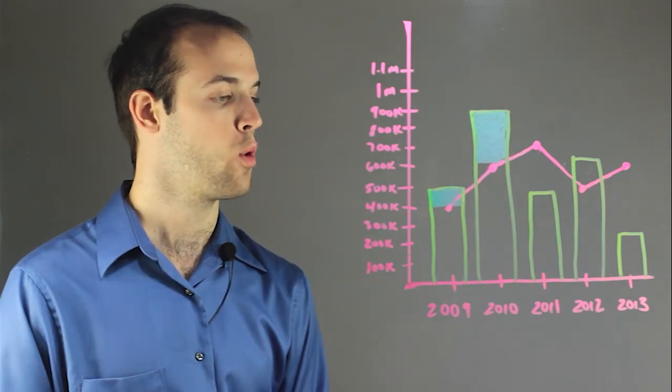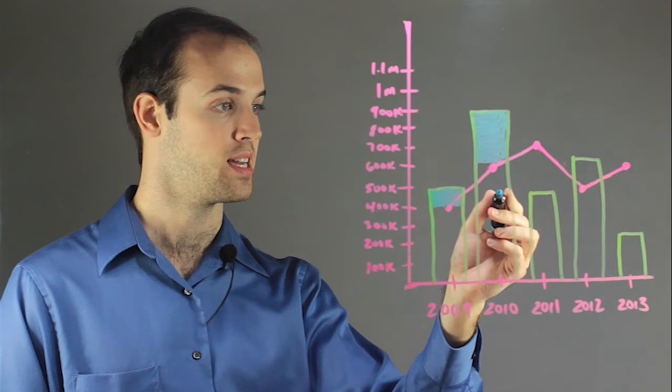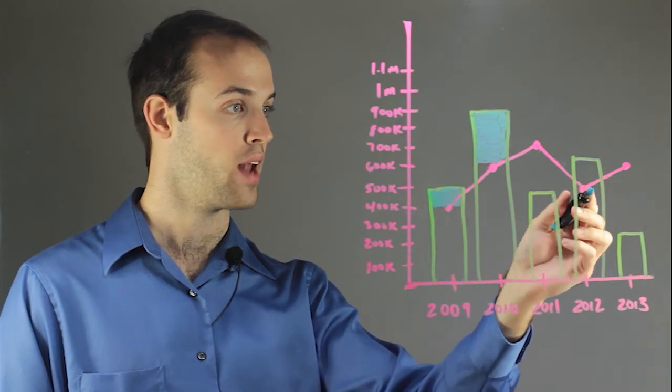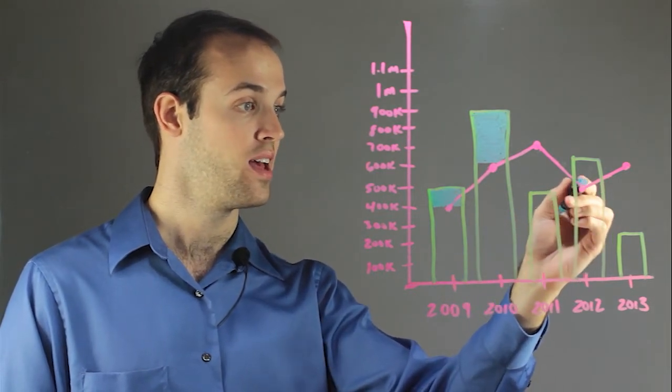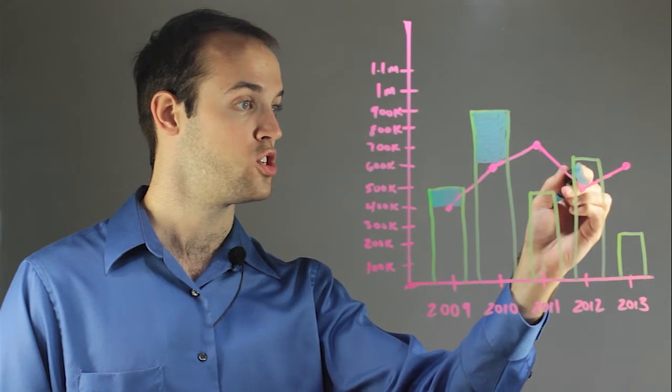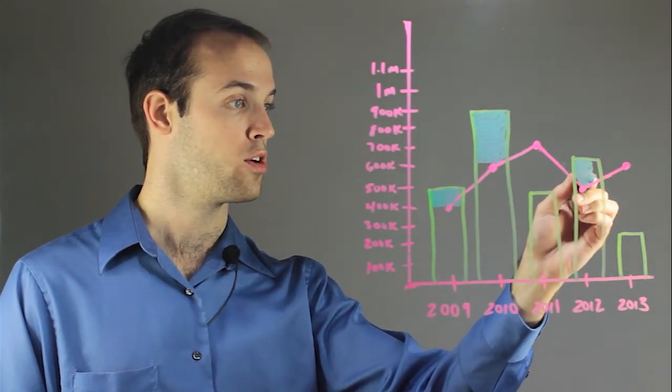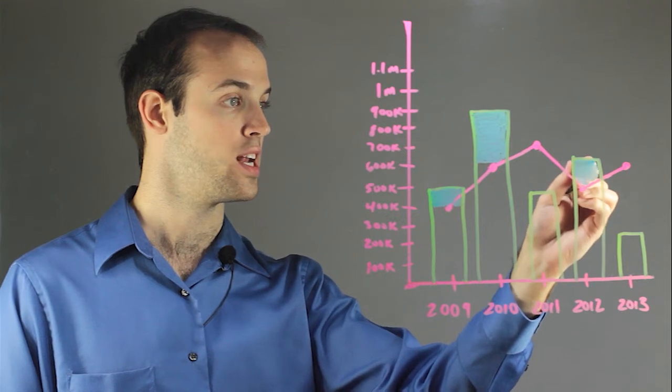And then I had one more overage, which was in 2012. We were expecting $500,000 and we put out $700,000. So that is an overage of $200,000. So I'm going to show that right here in blue, just by shading it in.